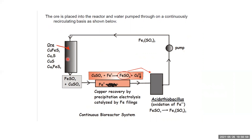The ore is placed into the reactor and water is pumped through on a continuously recirculating basis. Ferric sulfate is sprayed over the ore; copper sulfate and ferrous sulfate are obtained. Copper sulfate is treated with iron to get elemental copper. Ferrous sulfate is oxidized back to ferric sulfate by Leptospirillum ferrooxidans or Acidithiobacillus thiooxidans, recycled, and the whole cycle is repeated. That is all about bio leaching of copper. In the next session, we will study bio leaching of uranium.